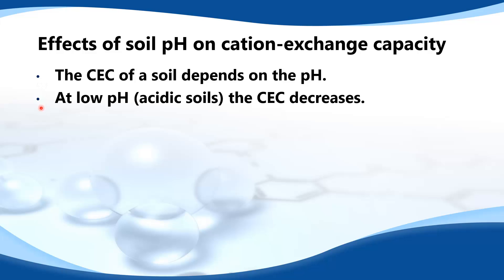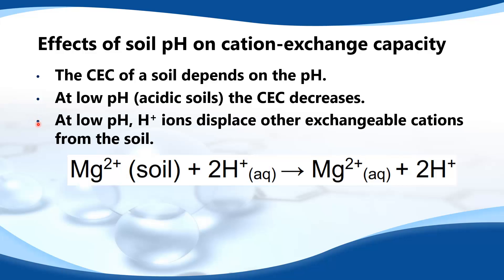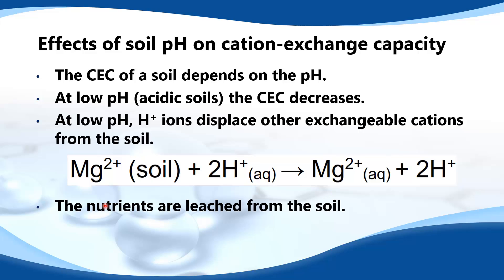At low pH, that's acidic soils, the cation exchange capacity decreases. That's because at low pH hydrogen ions displace other exchangeable ions from the soil. Here we have Mg²⁺, which is an essential plant nutrient, and hydrogen ions are displacing the magnesium ions from the soil, sending them into solution. So the nutrients — the Mg²⁺ — are leached from the soil and unavailable to be taken up by plants.